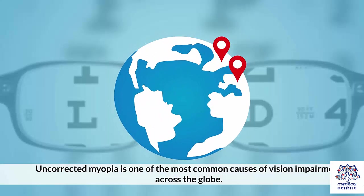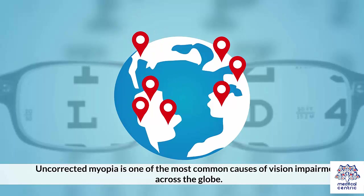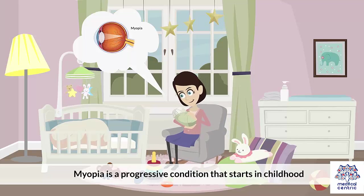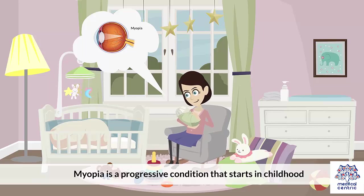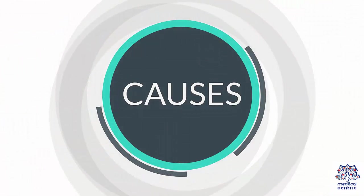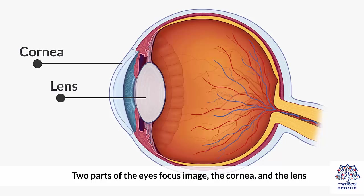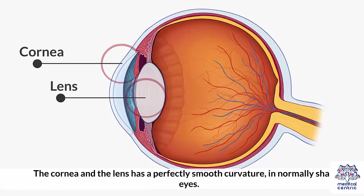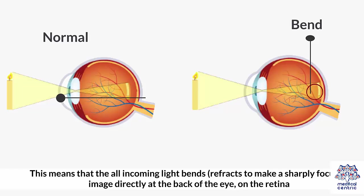Uncorrected myopia is one of the most common causes of vision impairment across the globe. Myopia is a progressive condition that starts in childhood. Two parts of the eye focus an image: the cornea and the lens. The cornea and the lens have a perfectly smooth curvature in normally shaped eyes, meaning all incoming light bends or refracts to make a sharply focused image directly at the back of the eye on the retina.